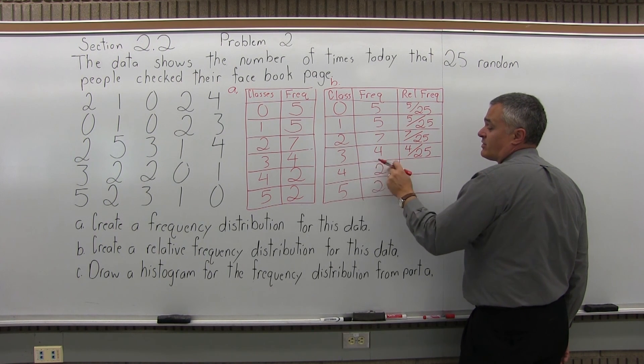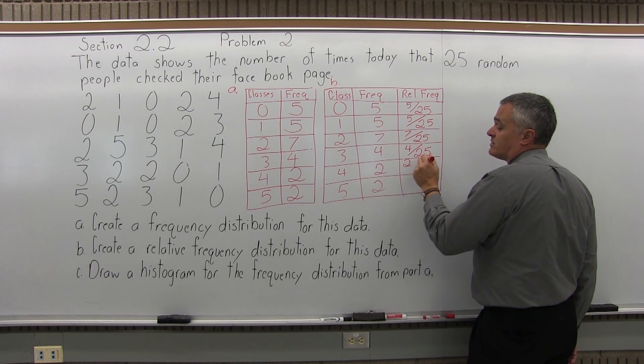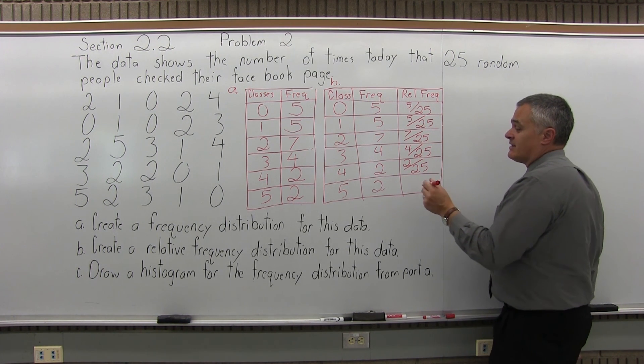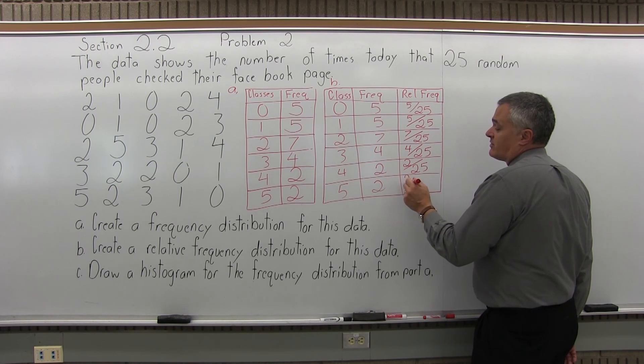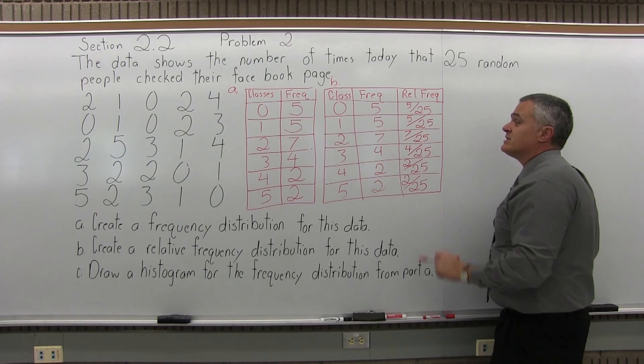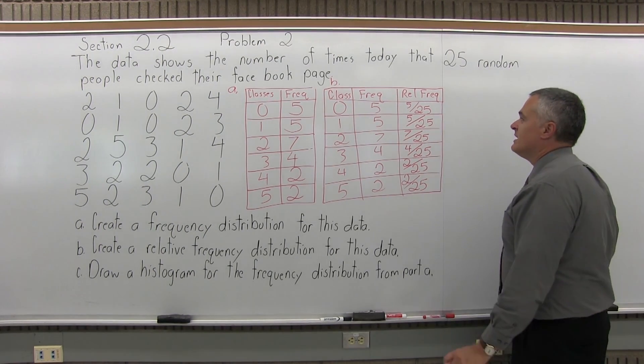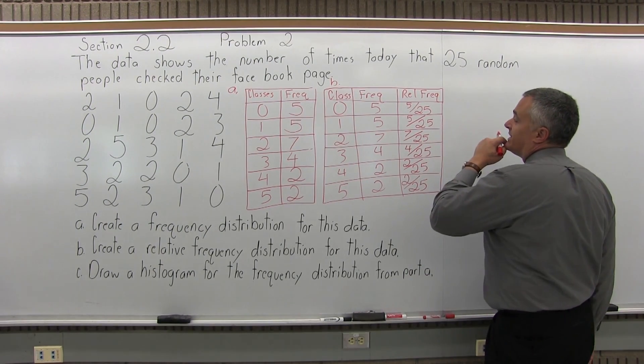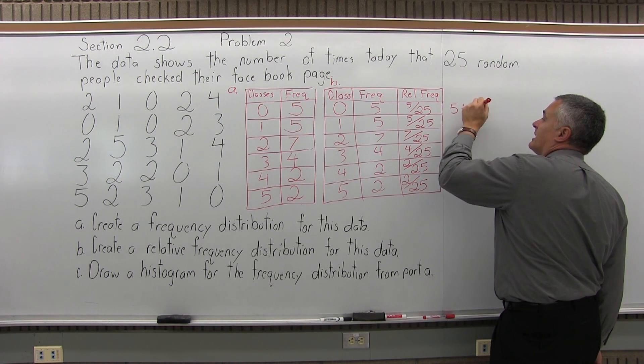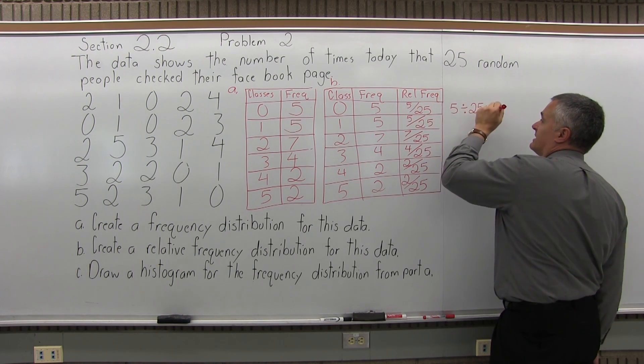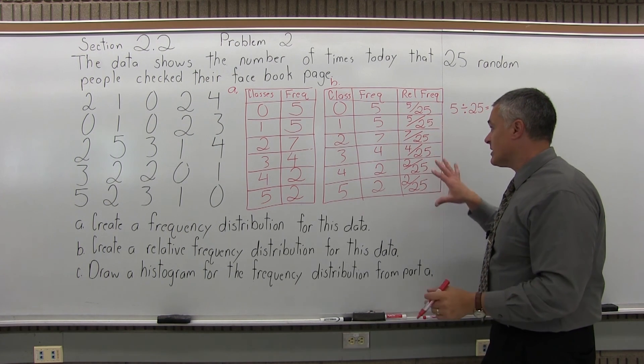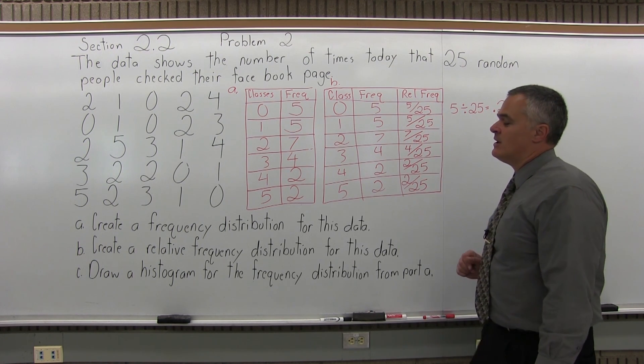And then the next class had a frequency of two, so relative frequency will be that two over the total of all the frequencies, which is 25. And finally, the last class also had a frequency of two, and the total of all the frequencies is 25. So the fractions can be reduced. You can leave them all the same over 25. If you prefer decimals with your calculator, you could do the numerator divide by the denominator equals, and in this case the calculator would tell you that it's .2. Or you can just leave them like that. Those are good.